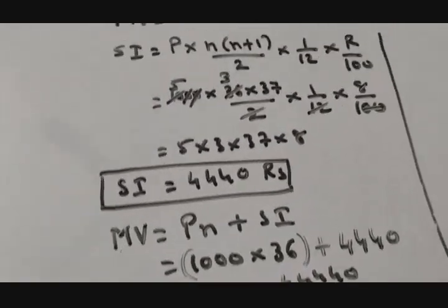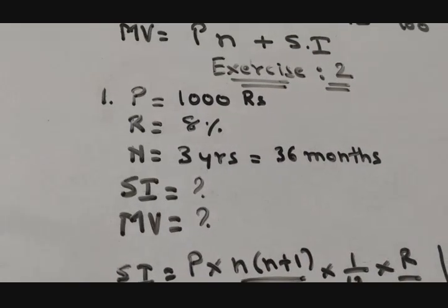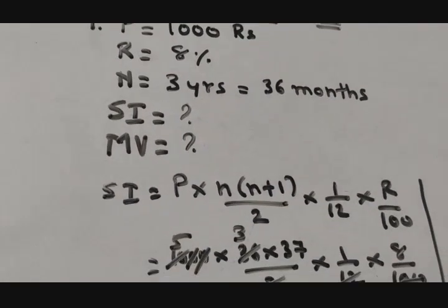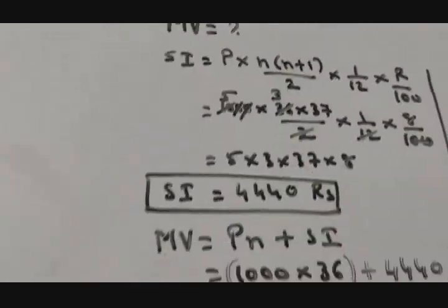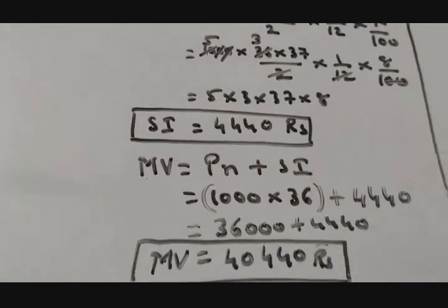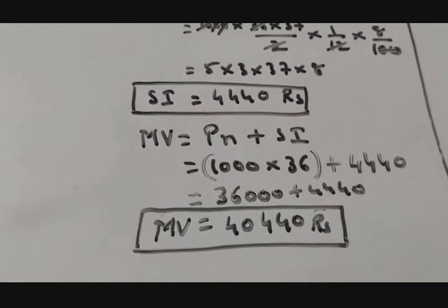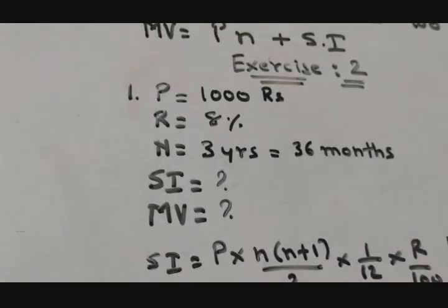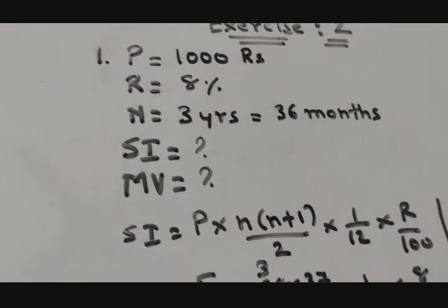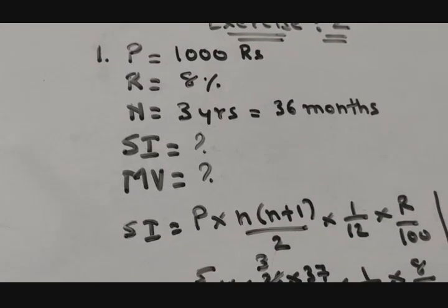I hope you understood this sum. It is pretty simple. You just have to replace the values in the formula SI and MV, and you calculate by simple calculation, you get both the answers. Any questions? If you have any doubts, please write in the comments. Thank you very much.